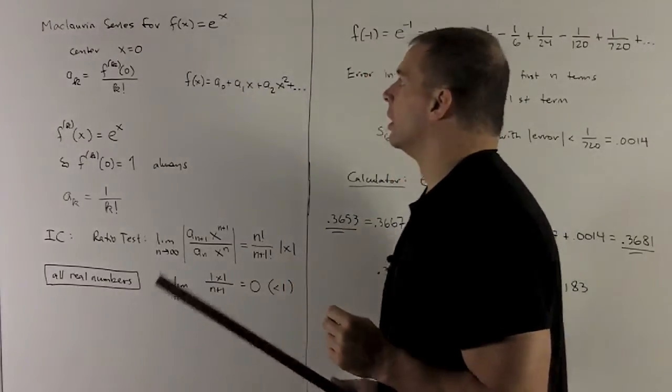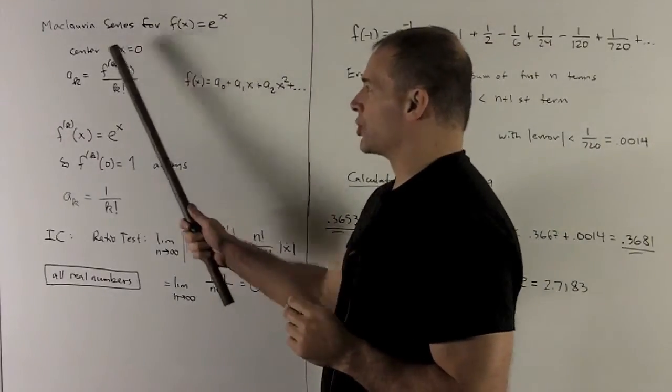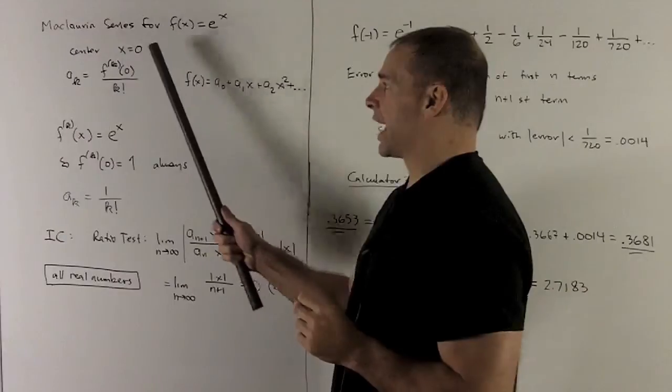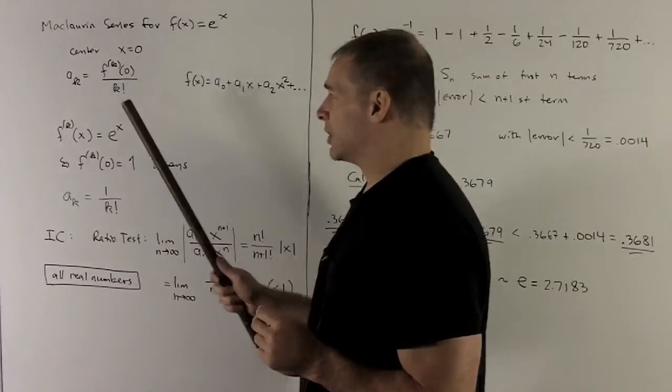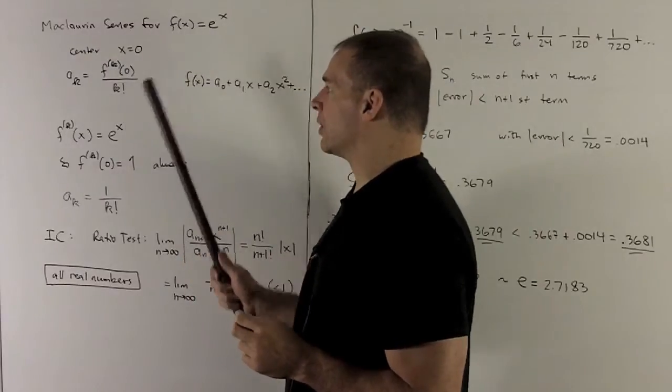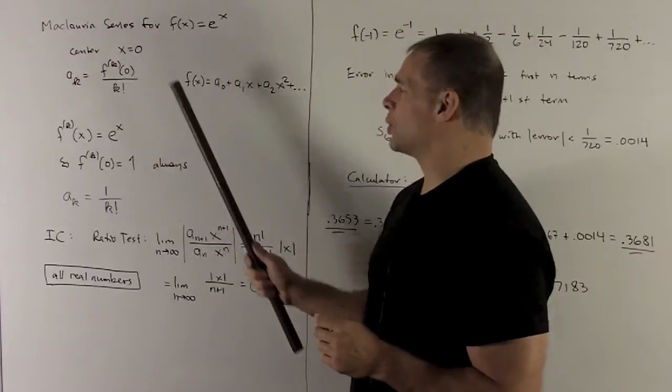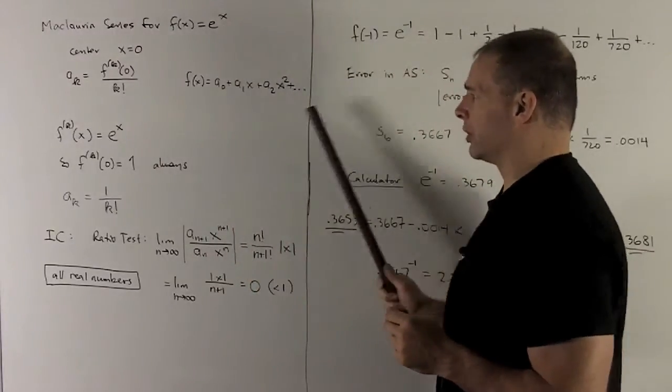So Maclaurin series for f of x equal to e to the x, that means our center, Maclaurin means center is x equals zero. We're going to have our Taylor coefficient formula a sub k equals kth derivative of f evaluated zero divided by k factorial. When I get all these terms, we're going to load them into a power series as so.